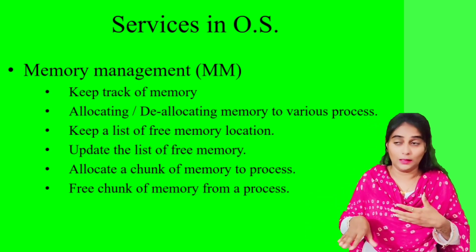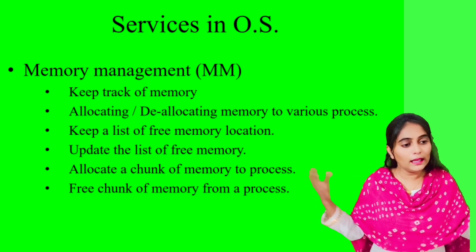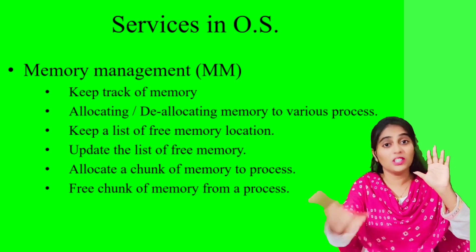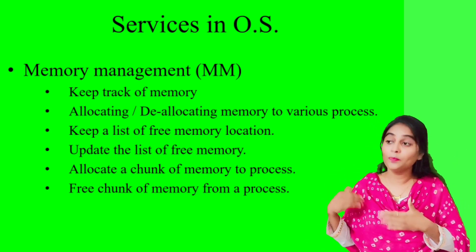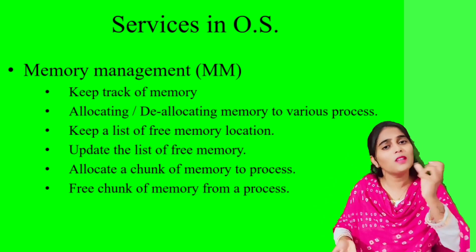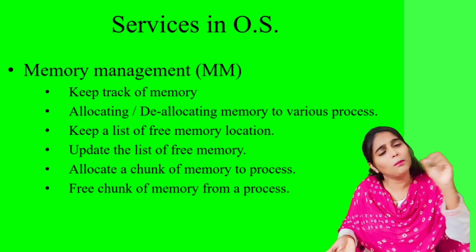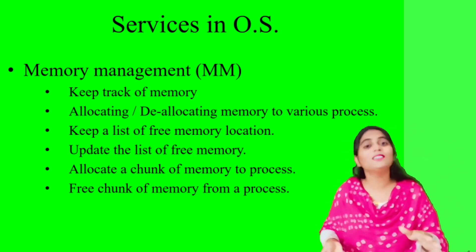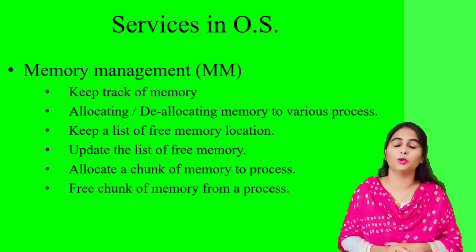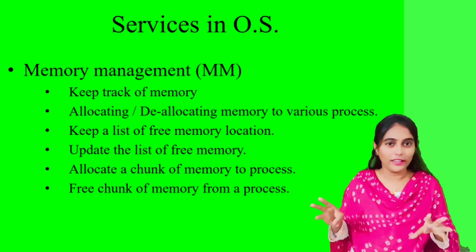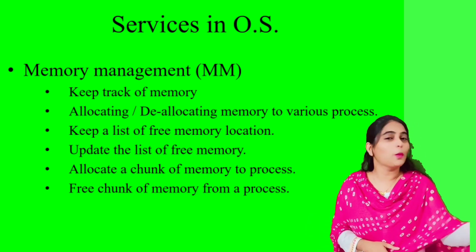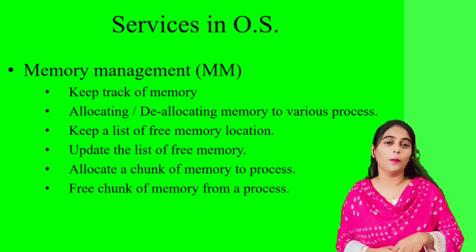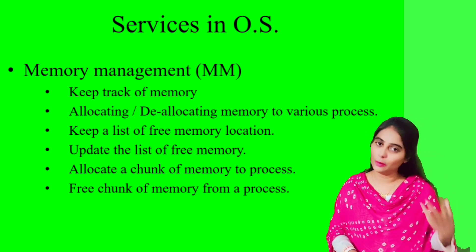After a program finishes execution, some memory may be occupied and some may be free. The operating system informs the next process which memory is available and which is occupied. So now you are aware of the three services provided by the operating system: information management, process management, and memory management.